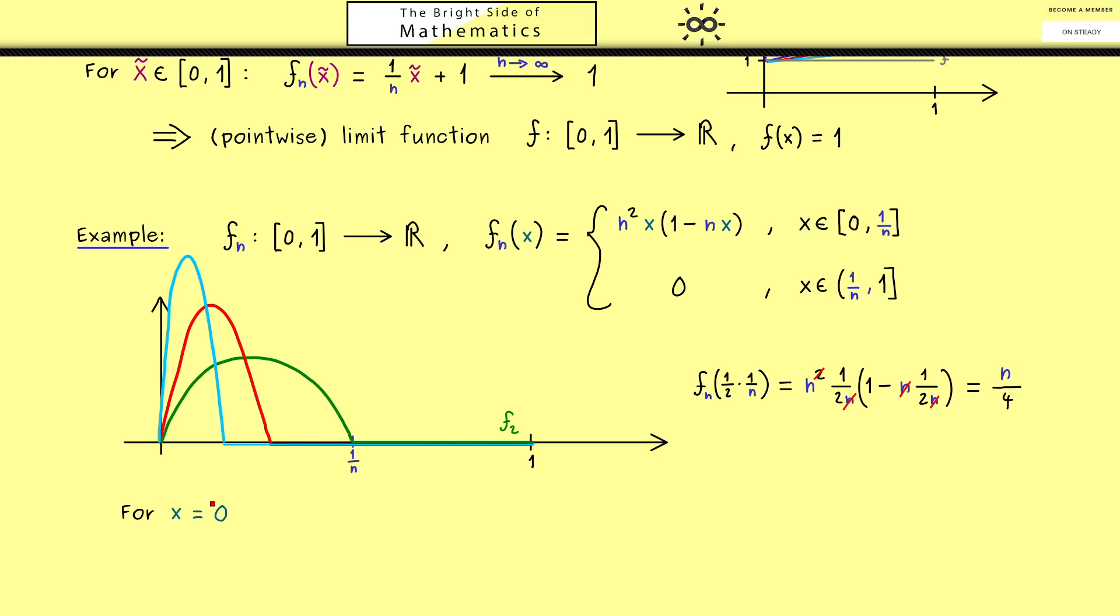For writing that down we should distinguish 2 cases. The first one is the simple one: x equals 0 means the value of this function at this point is equal to 0, and this property holds for all n. Now the case that x is greater than 0 gives us also the value 0, but only in the case that n is large enough. This is not hard to check. This is exactly the case when n is greater than 1/x, because then x lies in this interval here, or in other words on the right hand side where the function is 0.